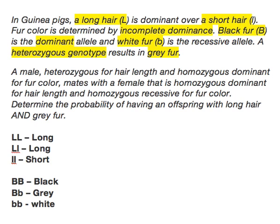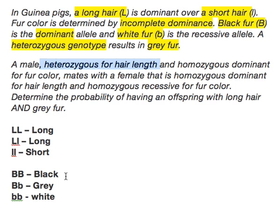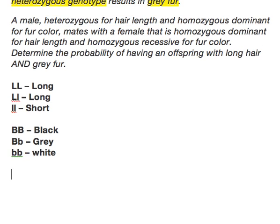We know what each genotype is going to result in. Now we need to figure out what the parents' genotypes are. The male guinea pig is heterozygous for hair length, so he is big L little L, and homozygous dominant for fur color, so big B big B. The female, on the other hand, is homozygous dominant for hair length — big L big L — and homozygous recessive for fur color, little b little b.